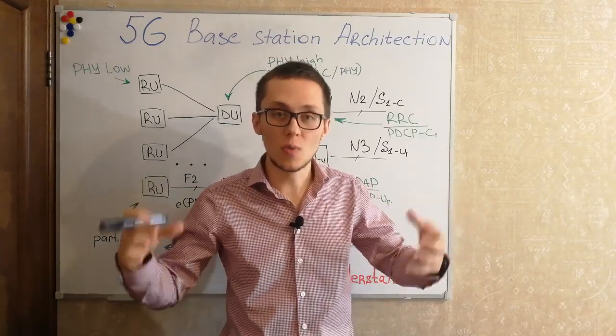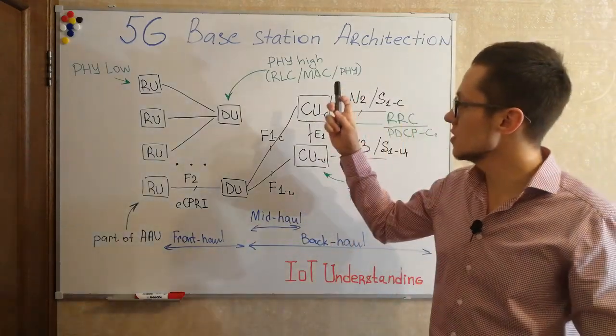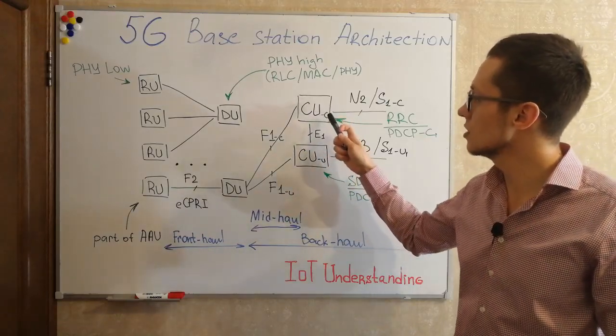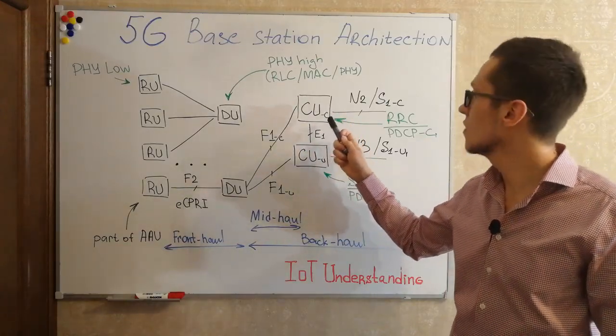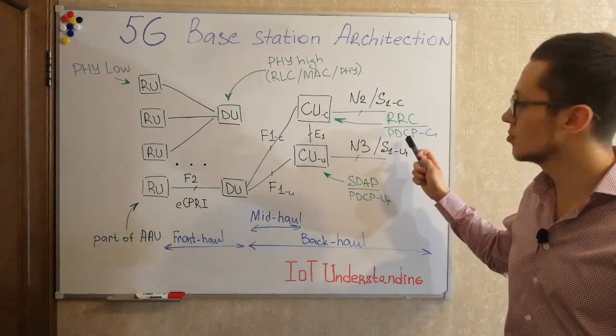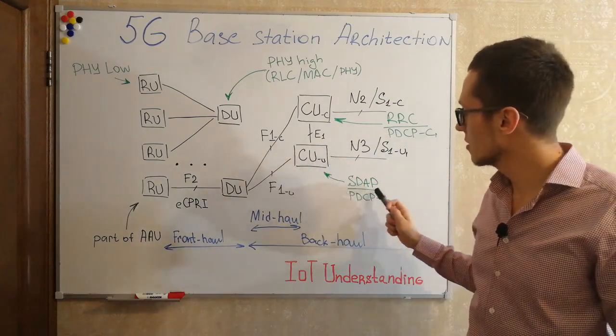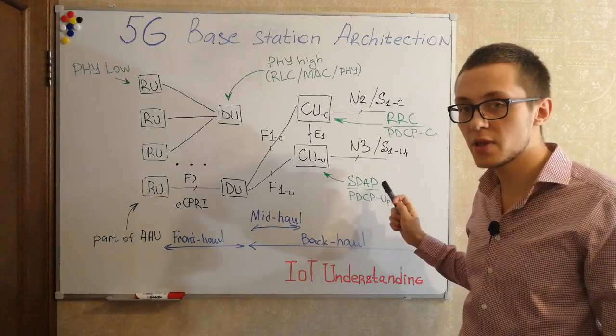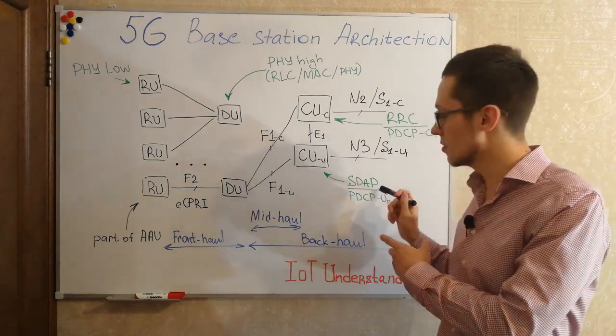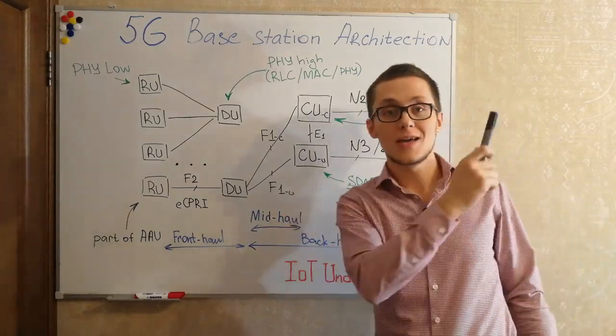But in 5G you can decompose your base station even more than before. 5G base station may consist of central unit for control layer processing, for handling such protocols as RRC and PDCP control, and central unit for user plane to handle SDAP layer and PDCP user plane. If you want to know more about SDAP, this is a new protocol in 5G networks, you can watch my video here.